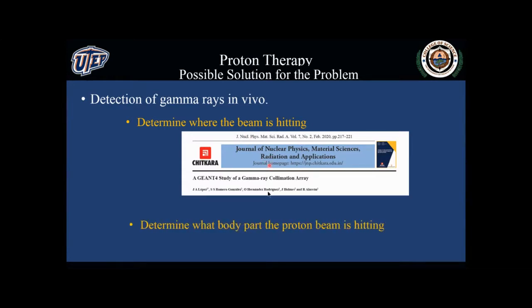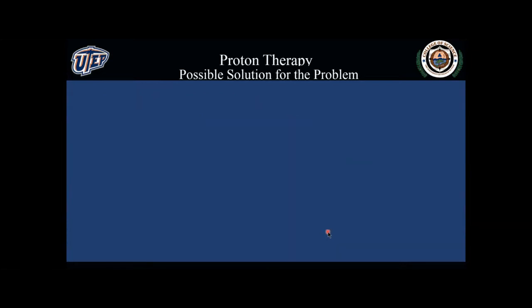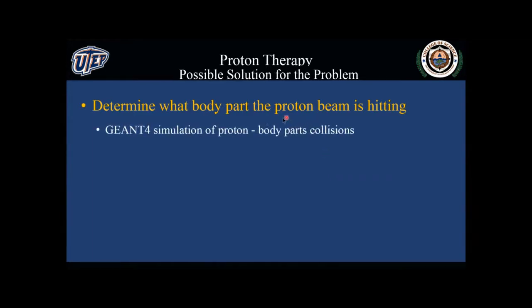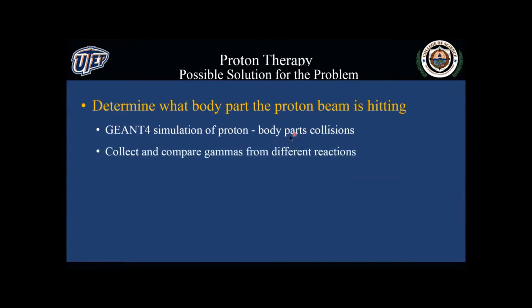But now the question is: what kind of body part is producing the gamma rays? The hope is that by looking at the gamma rays, we can hopefully distinguish between gamma rays being produced by lung, by bones, by blood tissue. So we are going to run a Geant4 simulation, compare these gamma rays, and use the differences to try to determine if it is possible to identify the source.